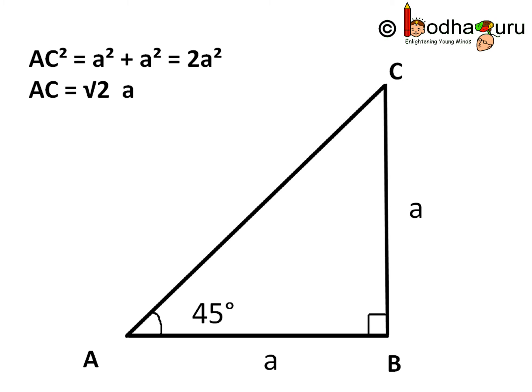Now using Pythagoras theorem, we know the square of hypotenuse equal to square of opposite side plus square of adjacent side. So we can write AC square is equal to A square plus A square.